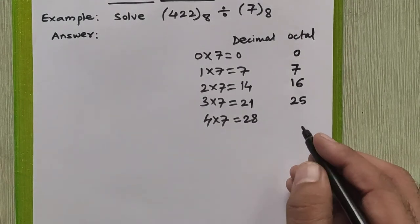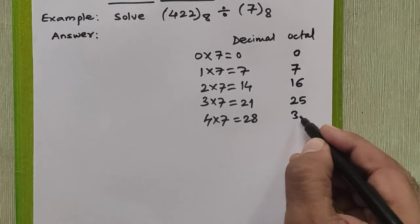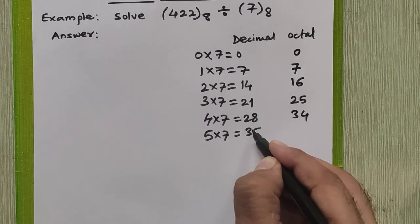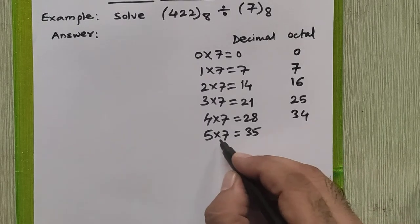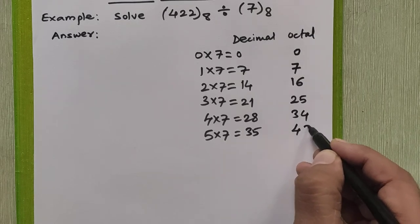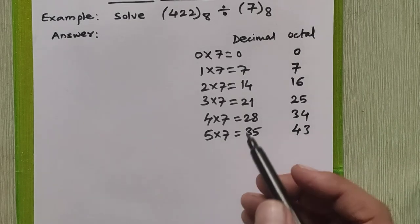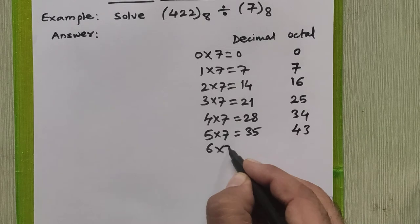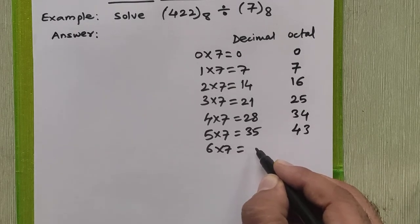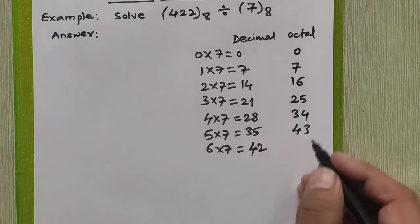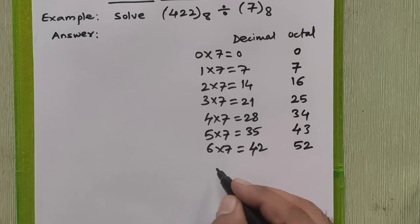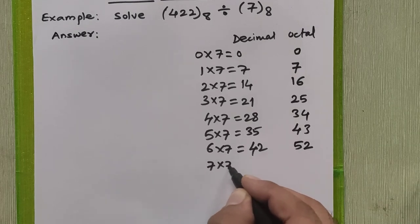4 into 7 is 28 in decimal, but in octal it is 34. Now 5 into 7 is 35. When you convert it into octal, it becomes 43 in octal.